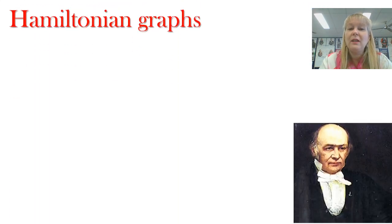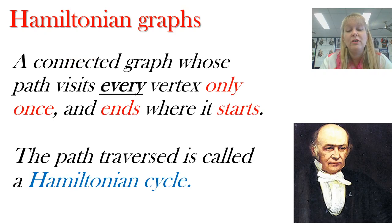Well, today we're looking at something called a Hamiltonian graph, and I've got a picture of Mr. Hamilton there on the right. It's a connected graph where every path visits every vertex just once and it starts and finishes in the same place. The pathway that we travel through here, because it's finishing and starting at the same place, is called a Hamiltonian cycle.